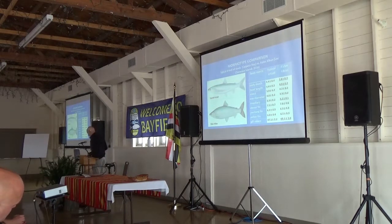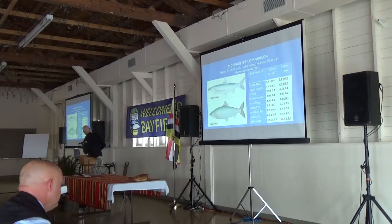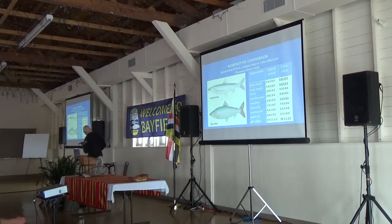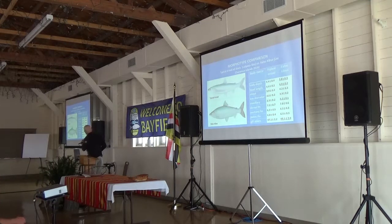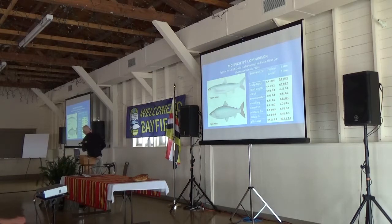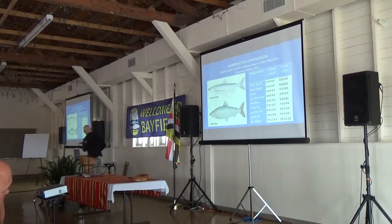Here is a comparison. We're comparing typical artedi from the Keltz collection with falsus albus. These are our nine inventories and these are the ratios. You can see that falsus albus is a deeper body fish. It's got a shorter head, a shorter maxillary, and two more gill rakers.